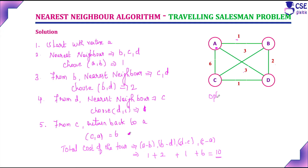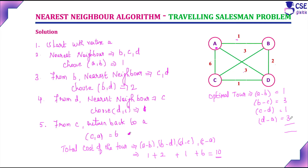Considering the optimal tour, the minimum cost we can get: A to B costs 1, B to C costs 3, C to D costs 1, D to A costs 3 — giving a total of 8. This is the optimal tour. But implementing the nearest neighbor algorithm gives a total cost of 10. The approximation ratio is 10/8 = 1.25, meaning the result is 25% larger than the optimal tour. This is the main disadvantage of the nearest neighbor algorithm.